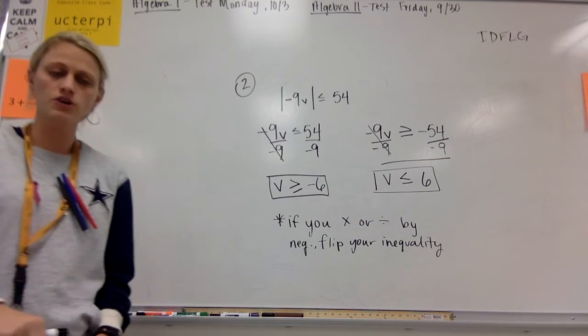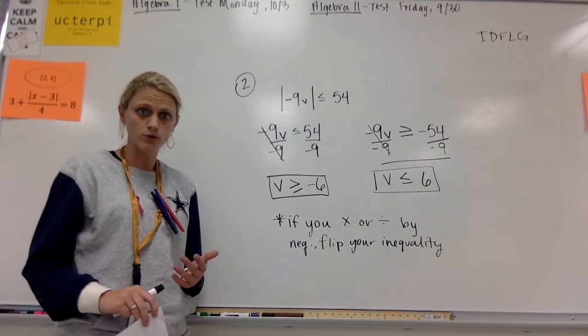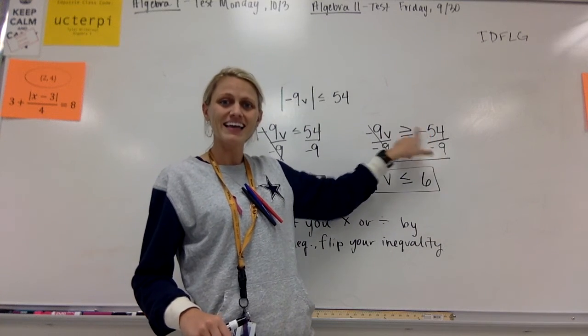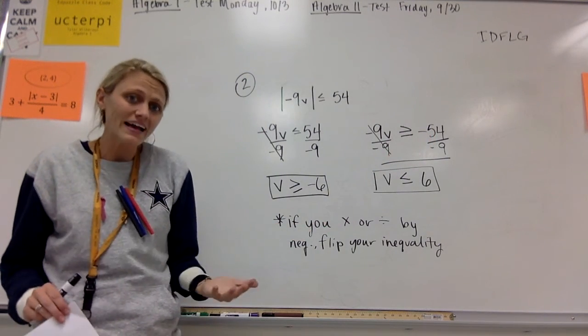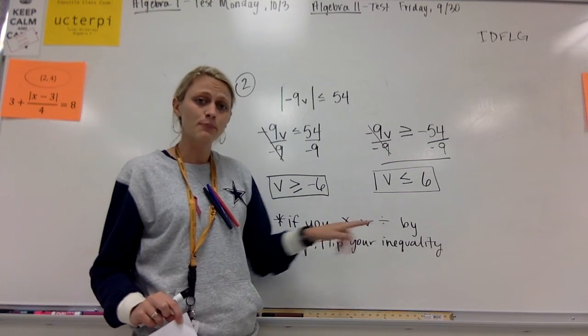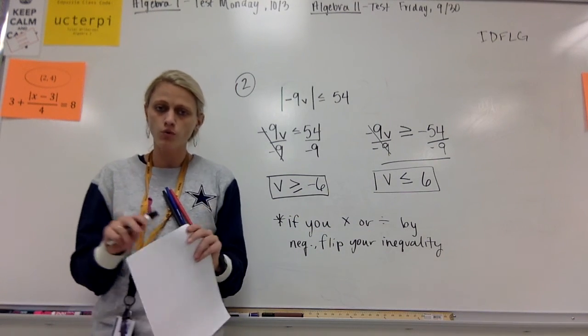So only two changes are happening from the original absolute value equations. First one, when we split it up, when you make that negative, your symbol flips around. Symbol also might flip around if you multiply or divide by a negative. Only two differences.